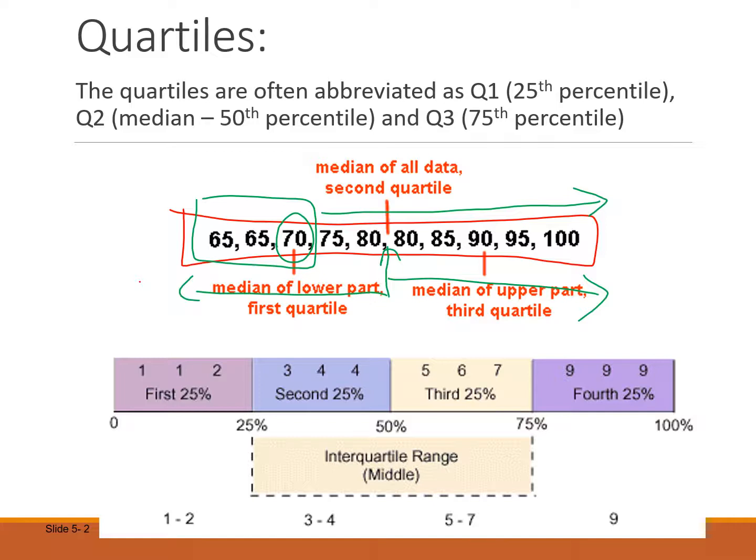There's also something called the interquartile range that's given by Q3 minus Q1 and that tells us what the middle 50 percent of the data looks like.